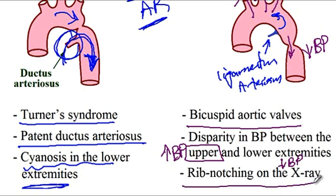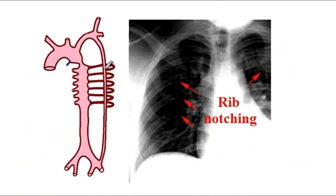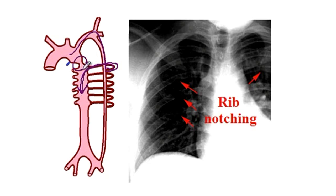Finally, there is rib notching seen on X-ray. This is due to the development of collateral circulation from the intercostal vessels. The intercostal vessels connect vessels from the upper extremity to the descending aorta, providing a way to bypass the coarctation via this collateral circulation. Due to the development of this collateral circulation, rib notching becomes visible on X-ray.